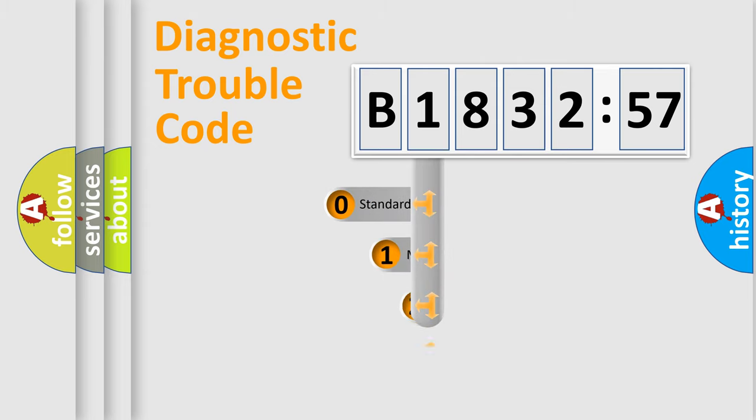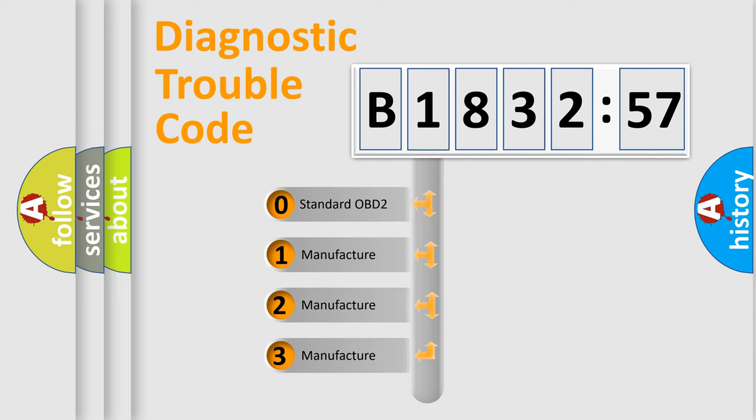Powertrain, Body, Chassis, Network. This distribution is defined in the first character code.